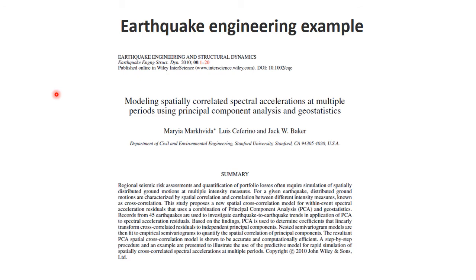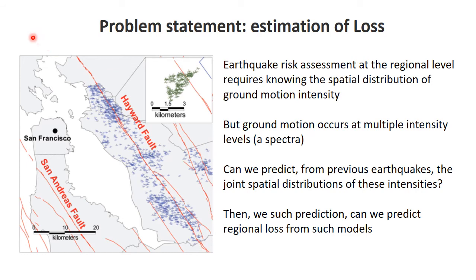Let's turn to the second example: the earthquake engineering example. This is done by students in the civil and environmental engineering program at Stanford. We're looking at assessing earthquake risk, loss, and portfolio loss in the Bay Area, which is relevant to us. Here we are at Stanford, San Francisco, the peninsula, the San Andreas fault, and also the Hayward fault, which is an important fault providing substantial earthquake risk. We need to assess that risk and the amount of loss that would occur when earthquakes happen in the future.